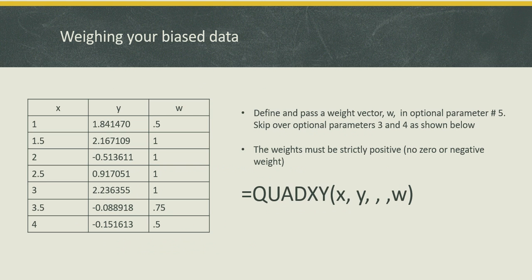So one thing you could do is if your data is biased or you know something about the accuracy, relative accuracy of your data points, you can supply a weight vector in argument number 5. In the table on the left I have an example here where I have assigned weights of 1 to the data I feel is more accurate than the others and smaller values for the data at the boundary.